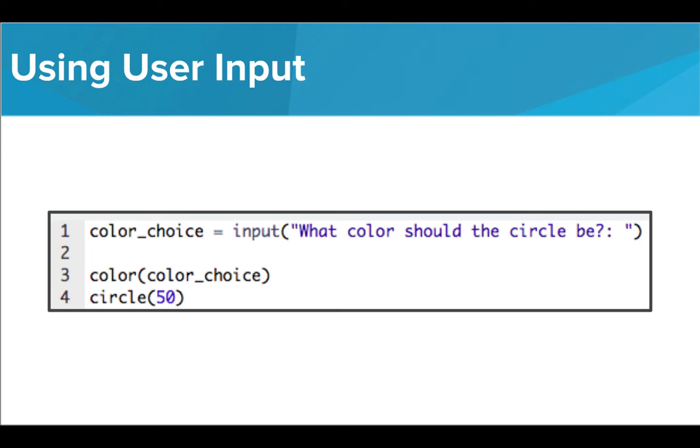Just a quick side note, we're using the variable named color_choice instead of just color because color is a reserved word in Python, so it cannot be used as a variable name. Because there is already a command using the word color, we need to choose something else for our variable.